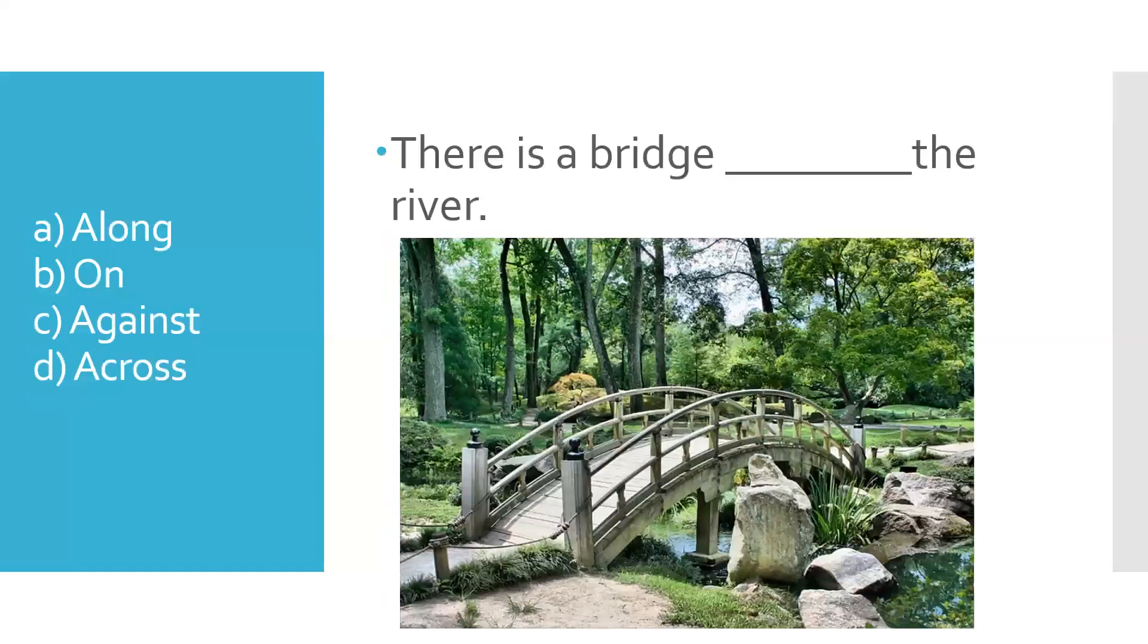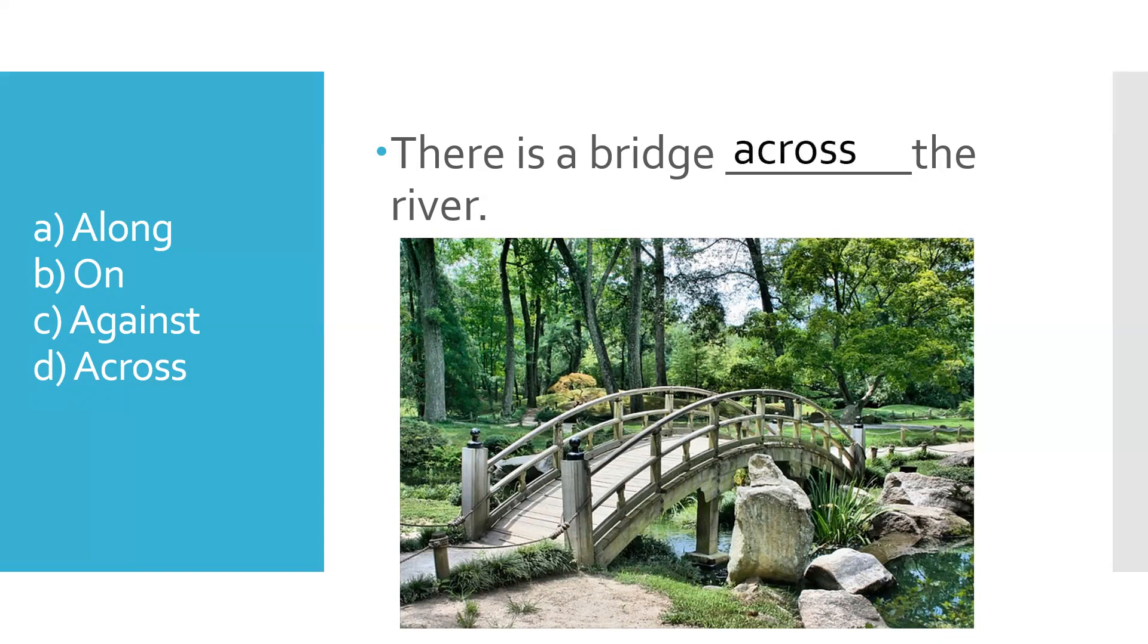What about this one? What should you say? There is a bridge along the river, on the river, against the river, or across the river? What's the right word here? The answer is across. Why? Because it helps you cross over. It is going from one end to the other end. From one side to the other side. It is not going along the river. Because if it were going along the river, you would never be able to cross that. All right. Hope that makes sense.